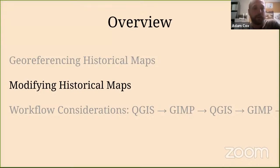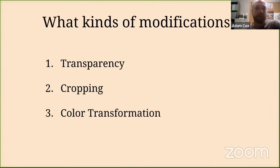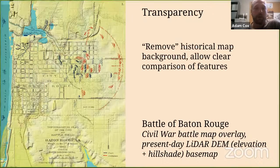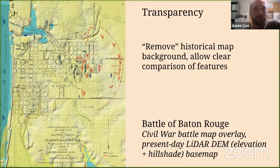What do I mean when I talk about modifying historical maps? I've had to do it in a lot of different projects for different reasons. There are three pretty decent categories, though there's overlap. The first is transparency — it's really nice with historical maps to be able to remove the background and retain the foreground features. This is a Battle of Baton Rouge Civil War map; once you remove the background after georeferencing, you can see the underlying base map — in this case, a LiDAR DEM elevation base map of Baton Rouge.